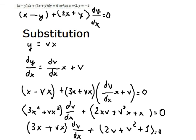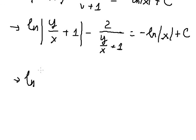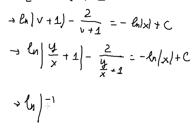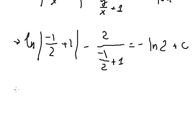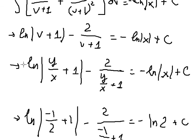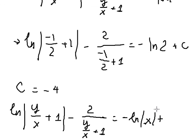When x equals 2 and y equals negative 1, we substitute these values in to find the constant C. We can find the value of C, which is negative 4. We put everything back into the equation with C equal to negative 4. That's the end. Thank you for watching.